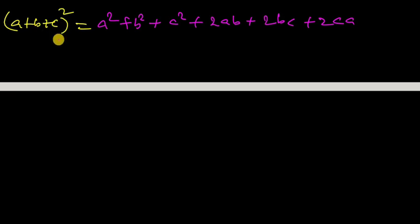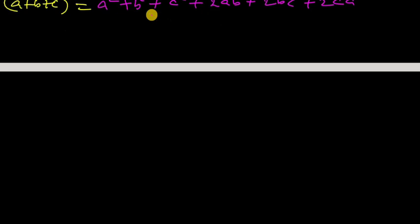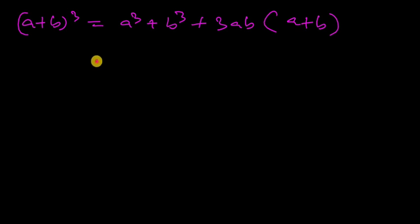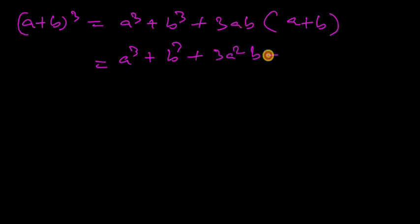Now the cube formulas. (a + b) whole cube equals a cubed plus b cubed plus 3 times of a squared b plus 3 times of ab squared. This is the (a + b) whole cube formula.